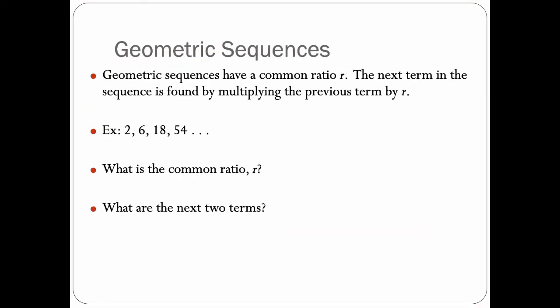Geometric sequences are similar. Geometric sequences have a common ratio r. The next term in the sequence is found by multiplying the previous term by whatever that ratio is.